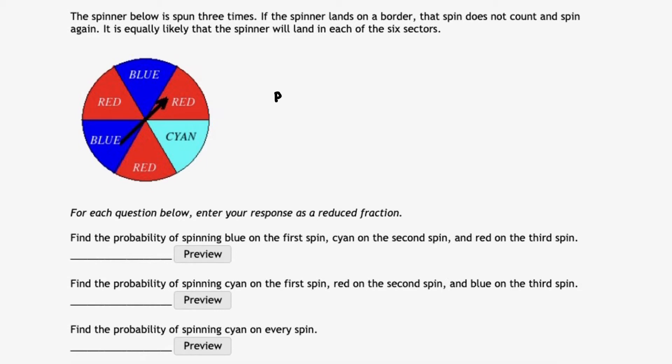So we're going to start by taking the probability of blue on the first spin, then we're going to multiply that times the probability of getting cyan on the second spin, and then we're going to multiply that times the probability of getting red on the third spin. Again, they're independent of each other, so we simply take those probabilities and multiply them together to get our result.